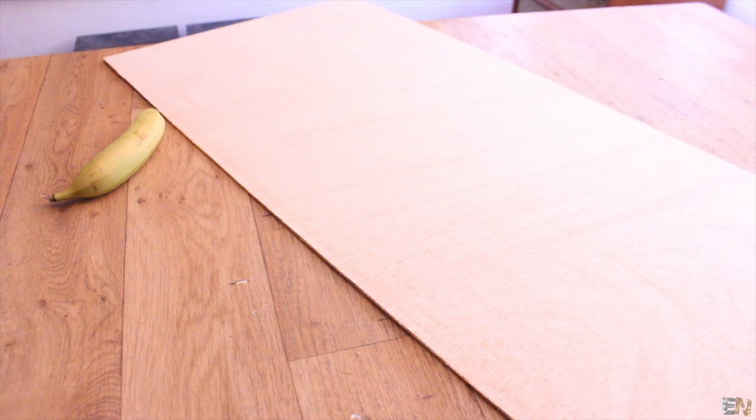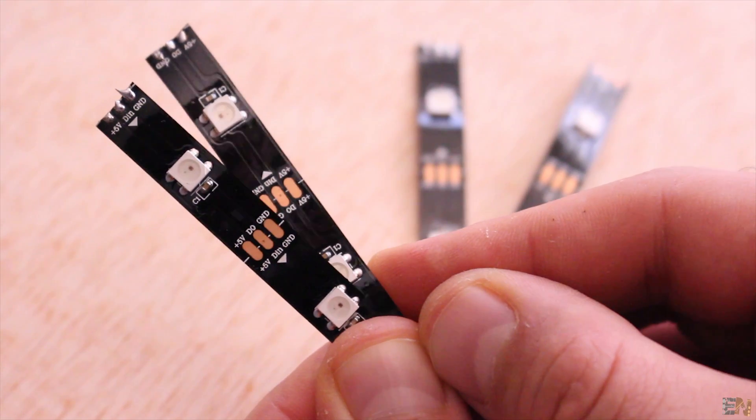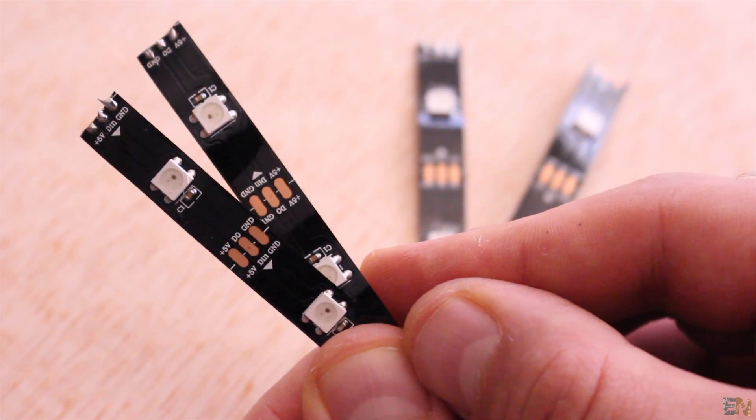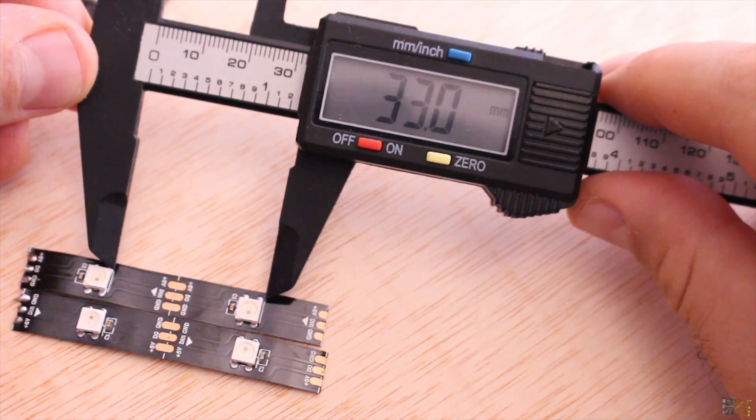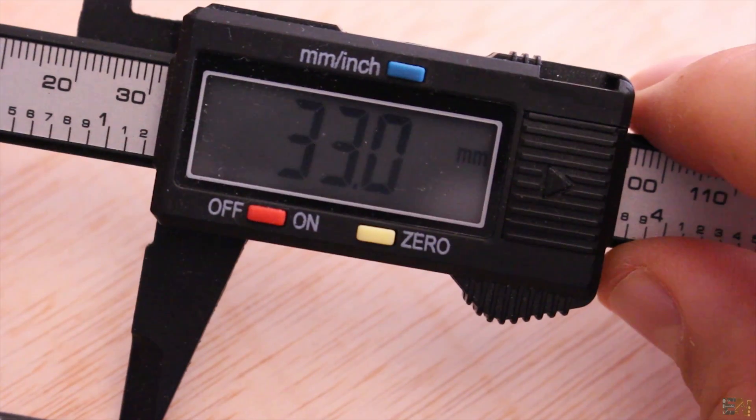We start with a piece of plywood of 5mm thickness. I'm using the WS2812 LED strip and the first thing that I do is measure the distance between the LEDs. In this case it's 33mm.